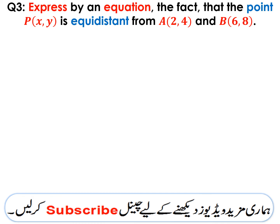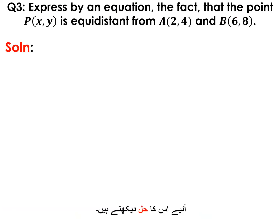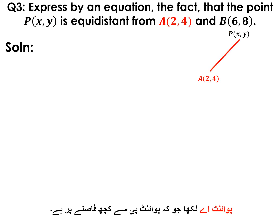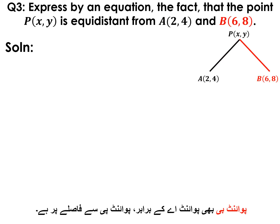Question number 3 is: express by an equation the fact that the point P(x, y) is equidistant from point A(2, 4) and point B(6, 8). Let's see its solution. This is point P given in the question. The points A and B are at equal distance from this point P. Point A is at some distance from point P, and point B is at the same distance as point A.